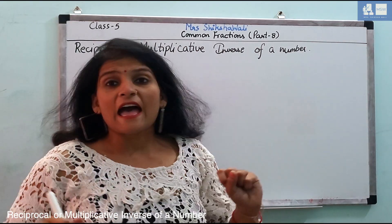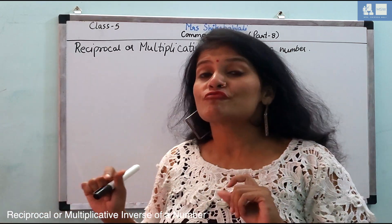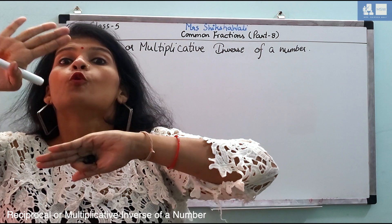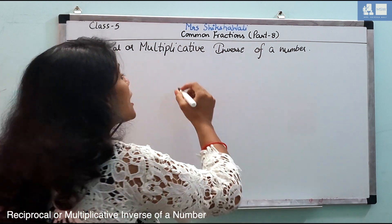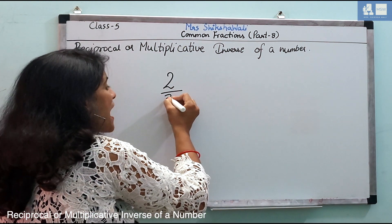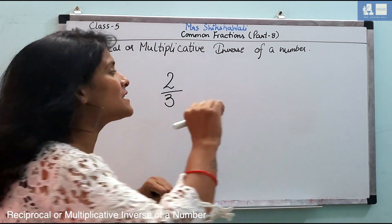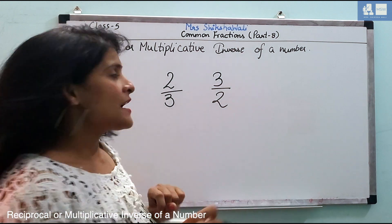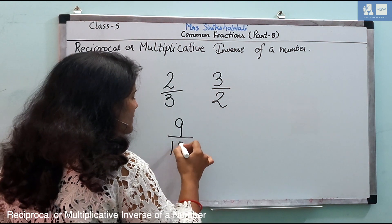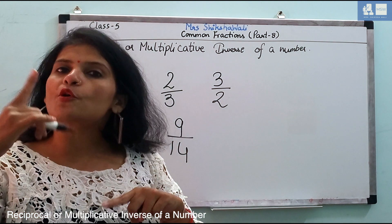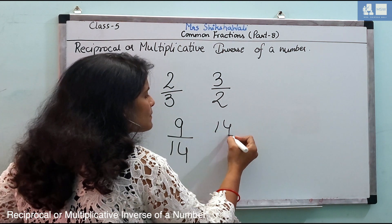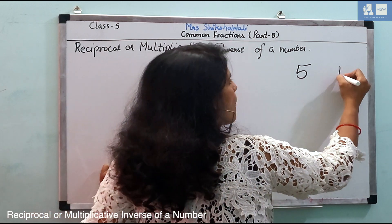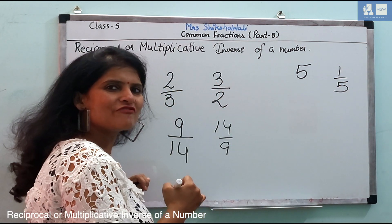So now, reciprocal or multiplicative inverse of a number. Reciprocal kya hoota hai, ulta, kiska ulta. Suppose ki jo fraction hai, 2 by 3 iska reciprocal kya hooga, 3 by 2. Agar koi number hai, fractional number 9 by 14, iska reciprocal kya hooga, 14 by 9. Agar koi number hai 5, iska reciprocal kya hooga, 1 by 5.